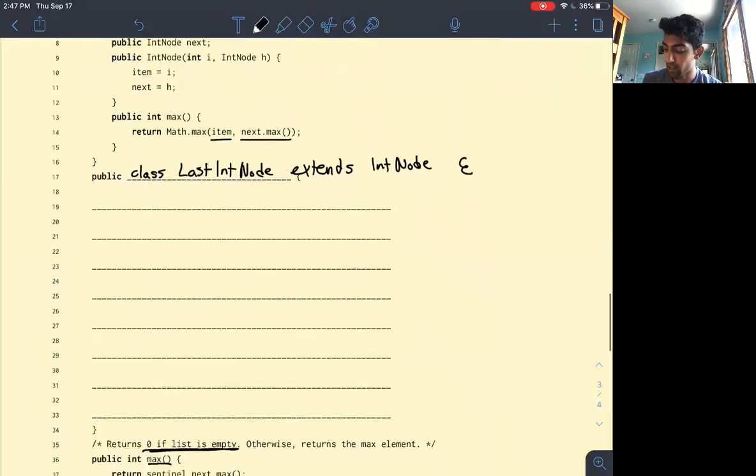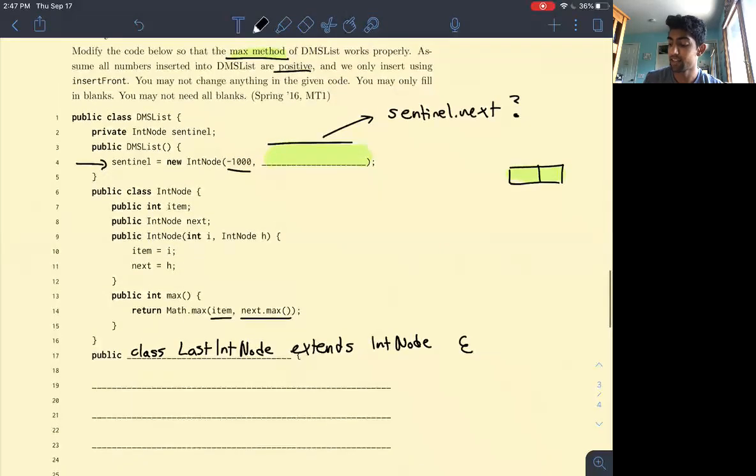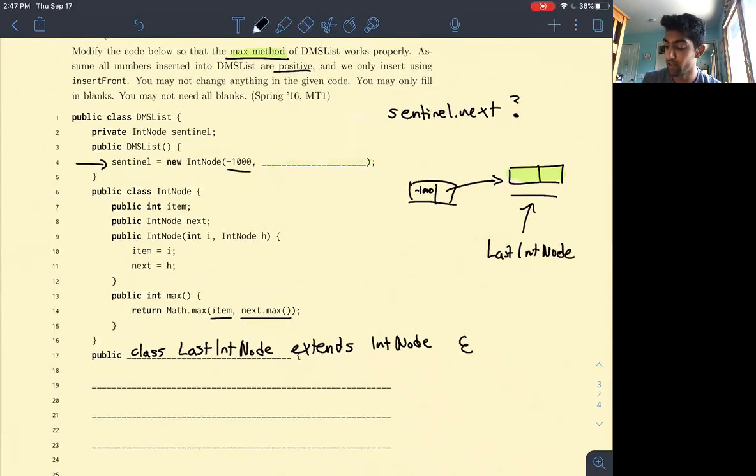Now what will happen is if we call sentinel.next.max and our current state of the list is we have our sentinel that's like negative 1,000 and it points to our green node, when we call sentinel.next.max, we call the max function of a last int node instance. And then here what we can do is we can create a last int node instance.